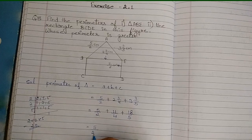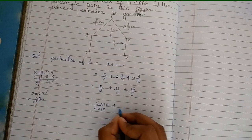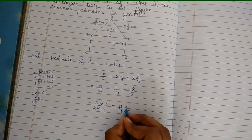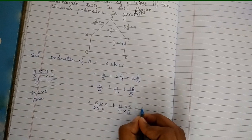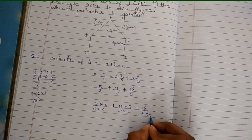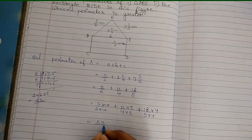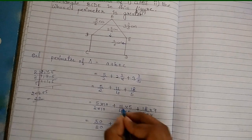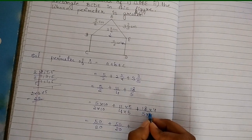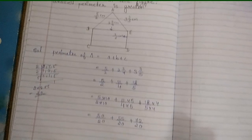Now for 5/2: 20 divided by 2 is 10, so multiply numerator by 10 — 5 times 10 is 50. For 11/4: 20 divided by 4 is 5, so multiply by 5 — 11 times 5 is 55. For 18/5: 20 divided by 5 is 4, so multiply by 4 — 18 times 4 is 72. So we have 50 plus 55 plus 72, all over 20.